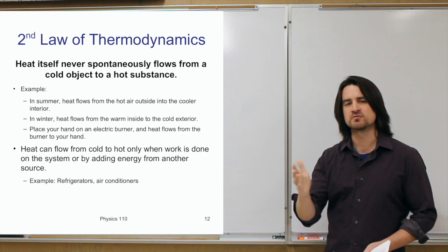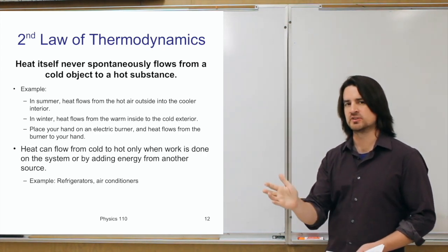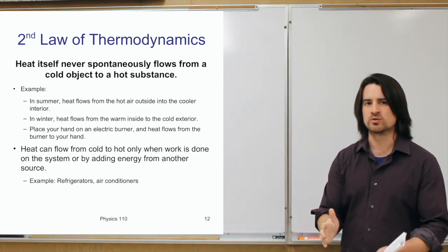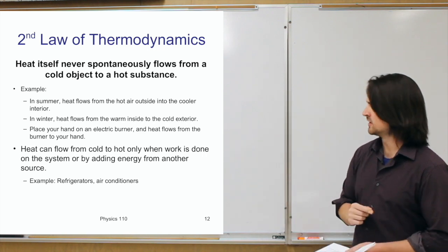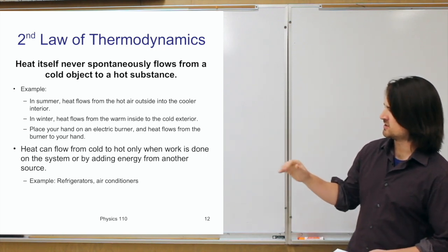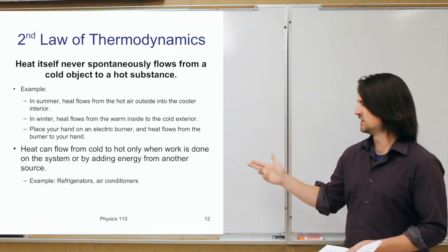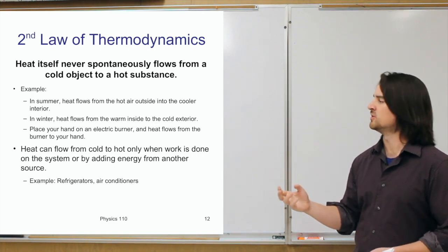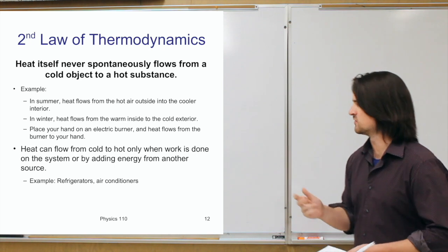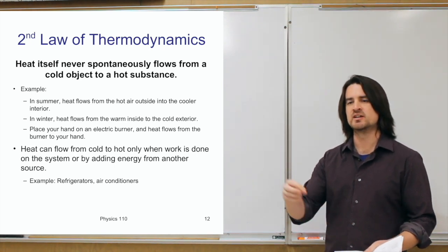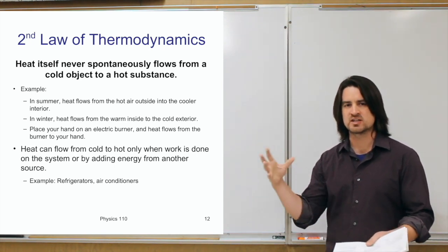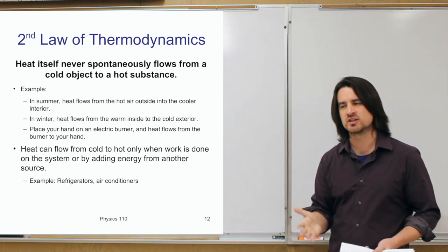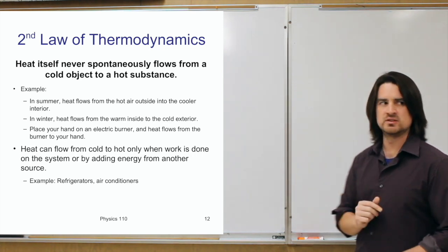Saying heat never spontaneously flows from cold to hot doesn't mean it's impossible — it just means some effort must be put in to force heat to flow from cold to hot. Examples of systems that do this are refrigerators and air conditioners. Refrigerators use a series of mechanisms to draw heat out of the interior and expel it outside. Air conditioners similarly draw heat out of the interior of a home and push it outside.